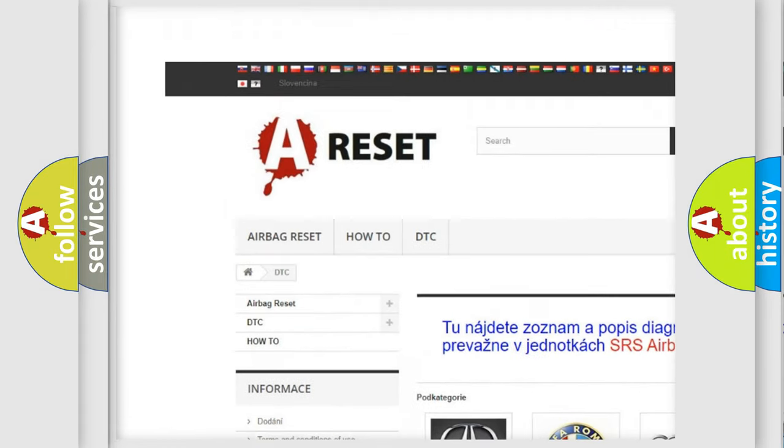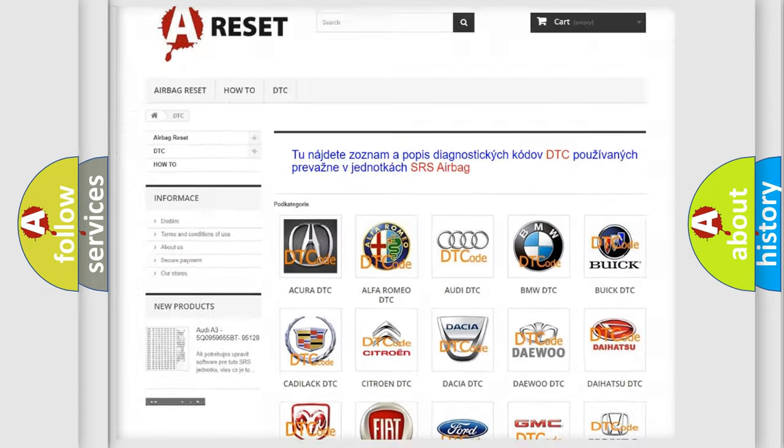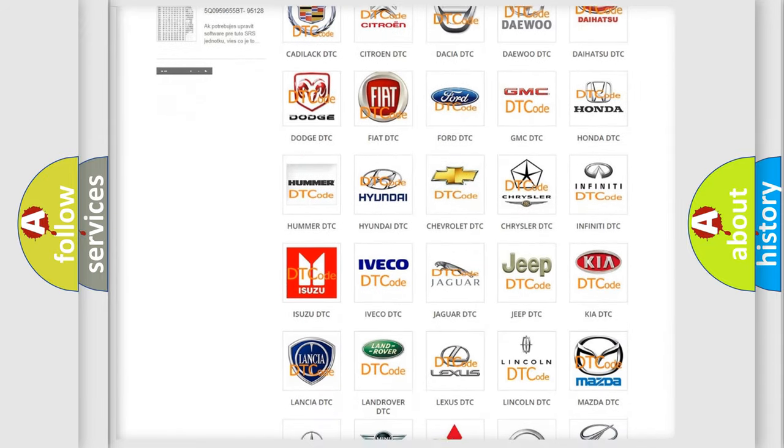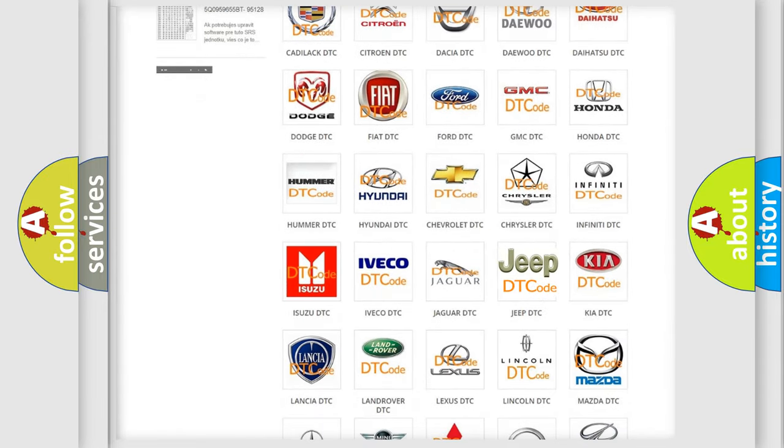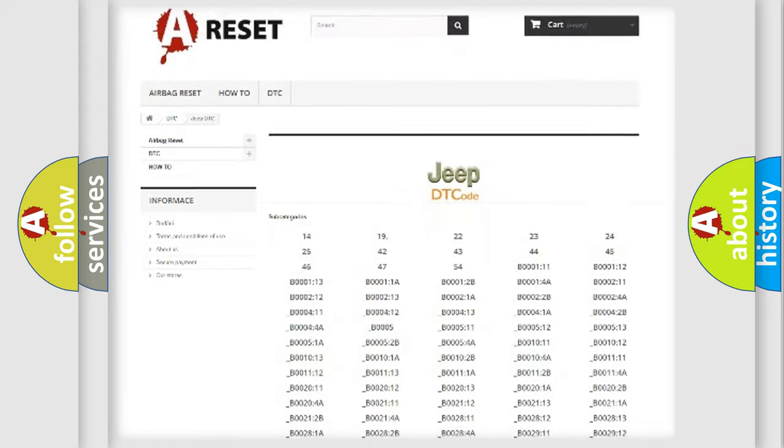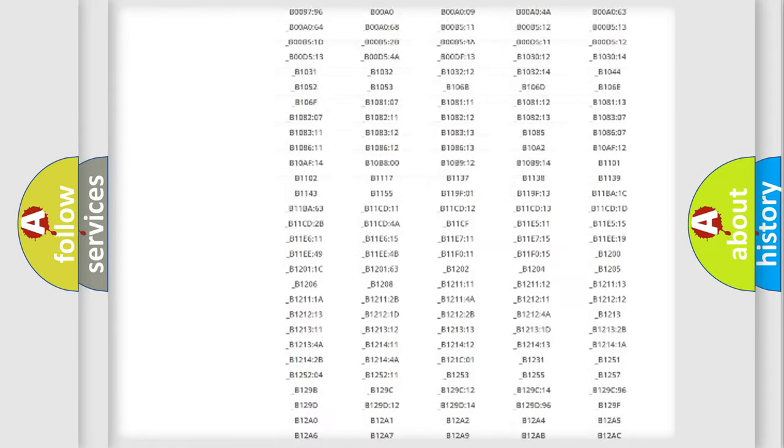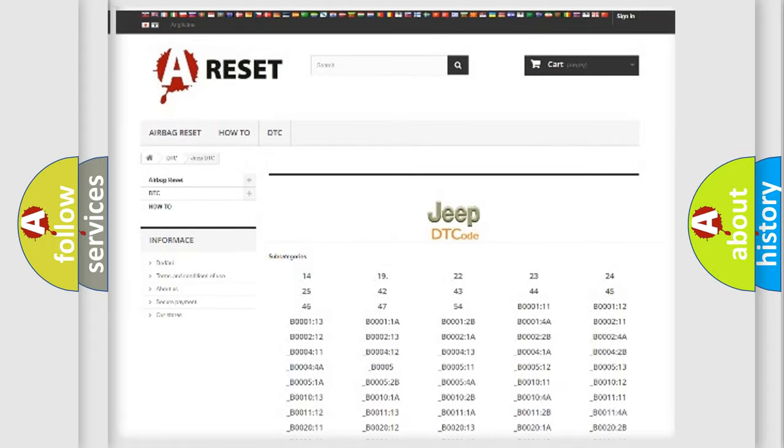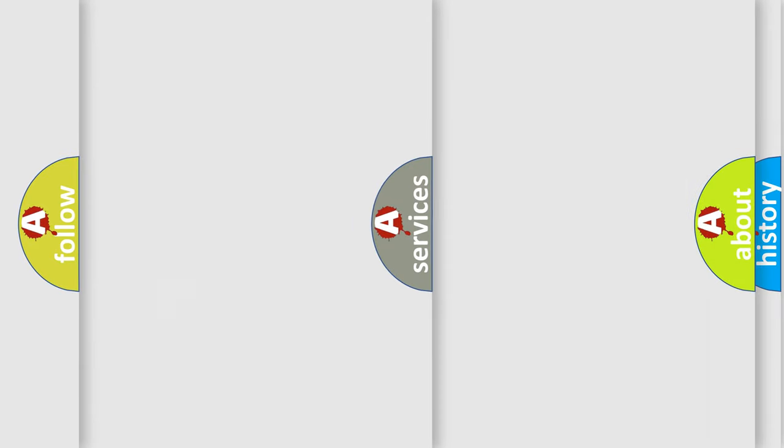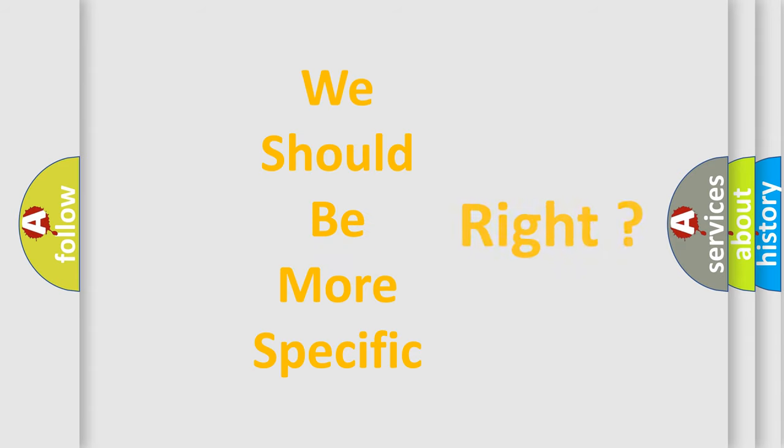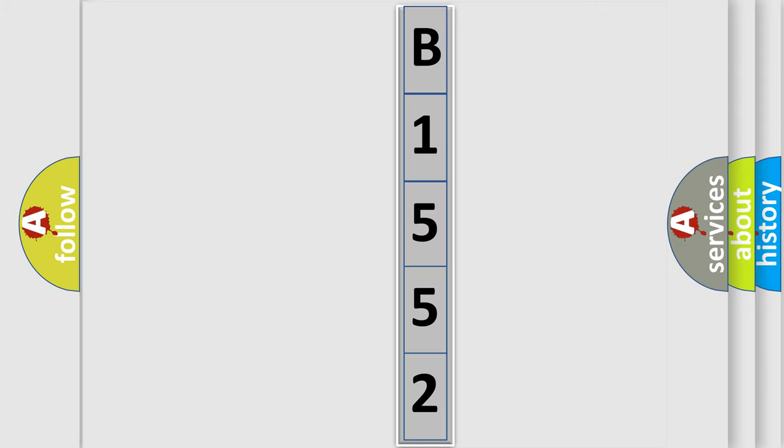Our website airbagreset.sk produces useful videos for you. You do not have to go through the OBD2 protocol anymore to know how to troubleshoot any car breakdown. You will find all the diagnostic codes that can be diagnosed in Jeep vehicles, and many other useful things. The following demonstration will help you look into the world of software for car control units.